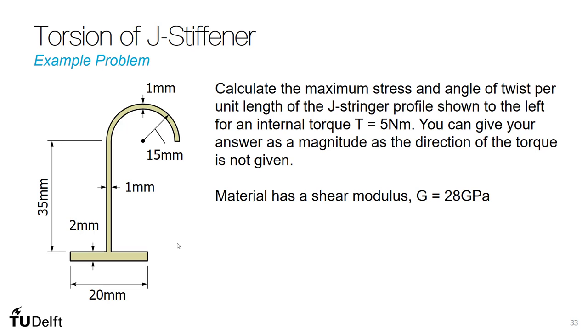In this example problem we are going to examine the torsional behavior of the J-stiffener shown here, which comprises of a thin plate of 1 millimeter thickness along this semicircular section and straight section connected to a base plate with a thickness of 2 millimeters. The other dimensions are shown here in this diagram.